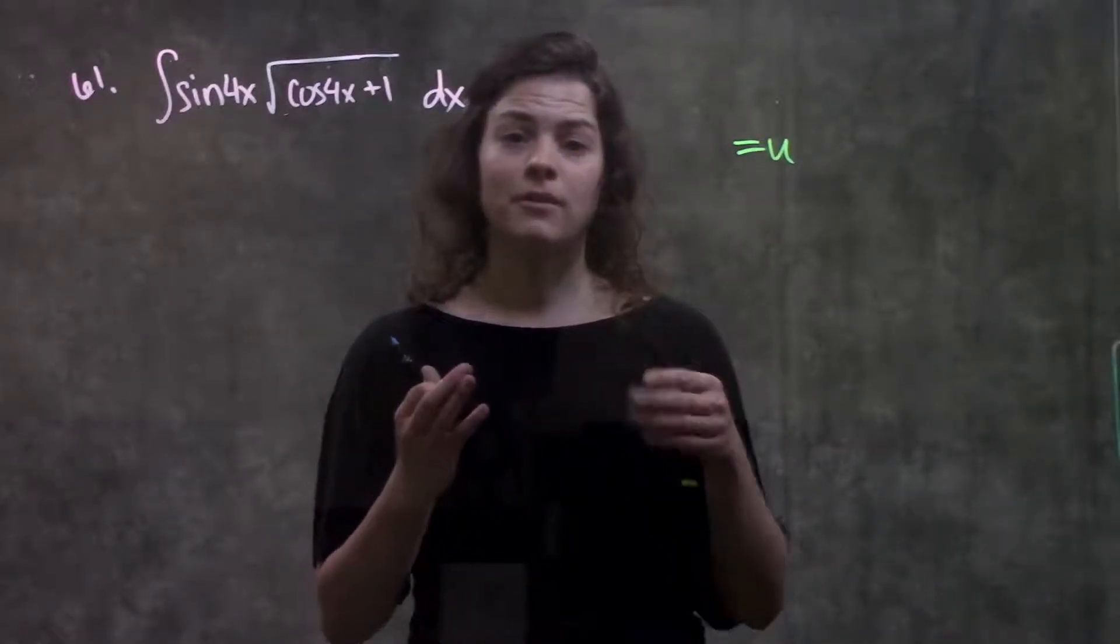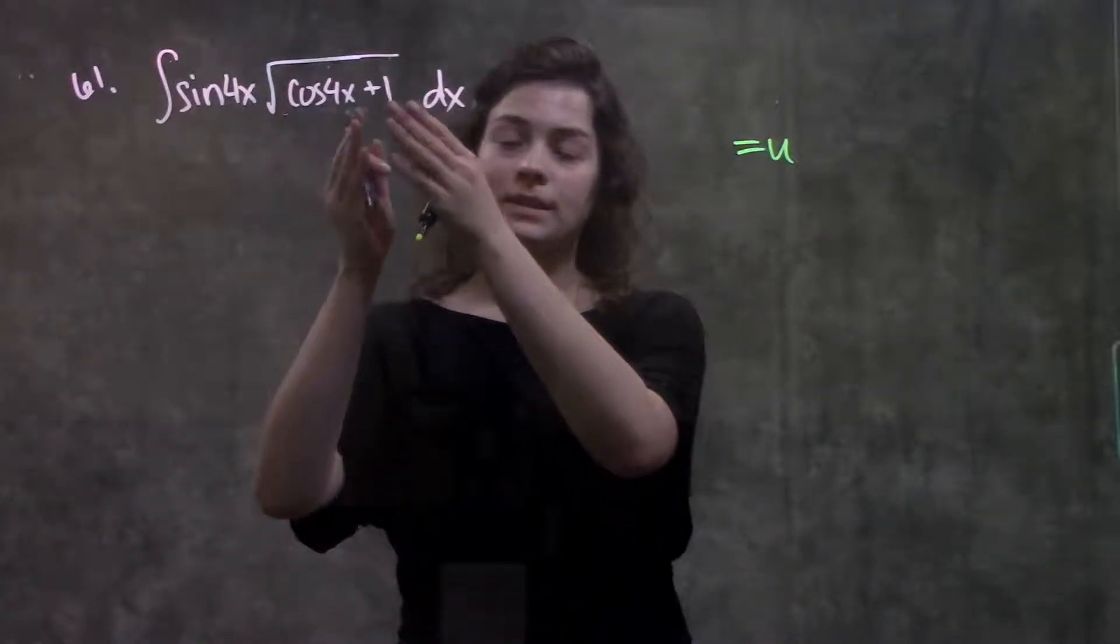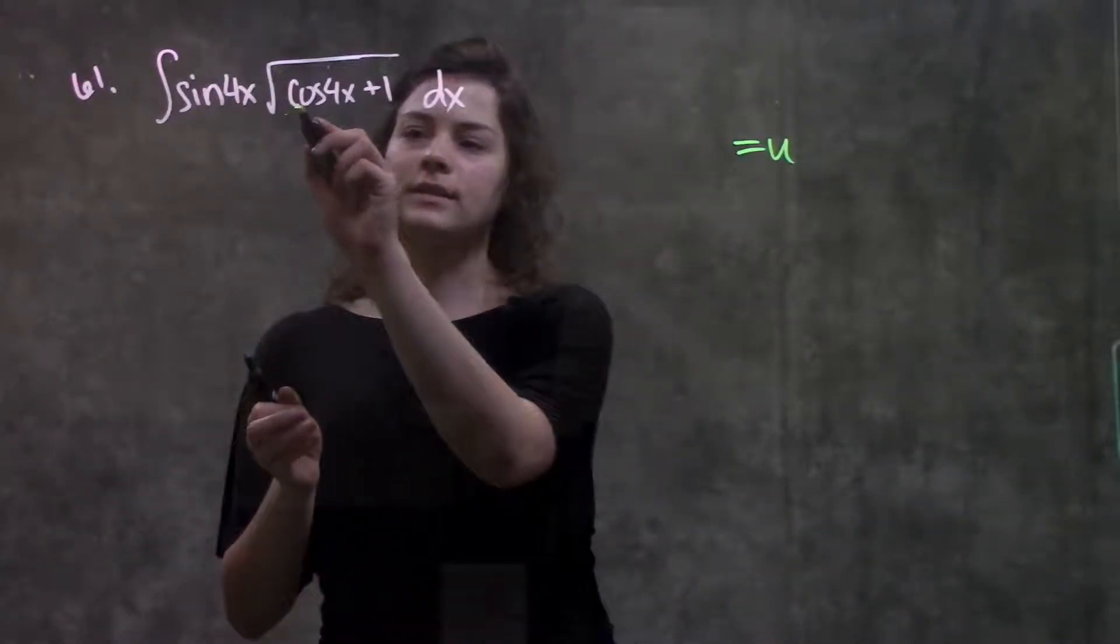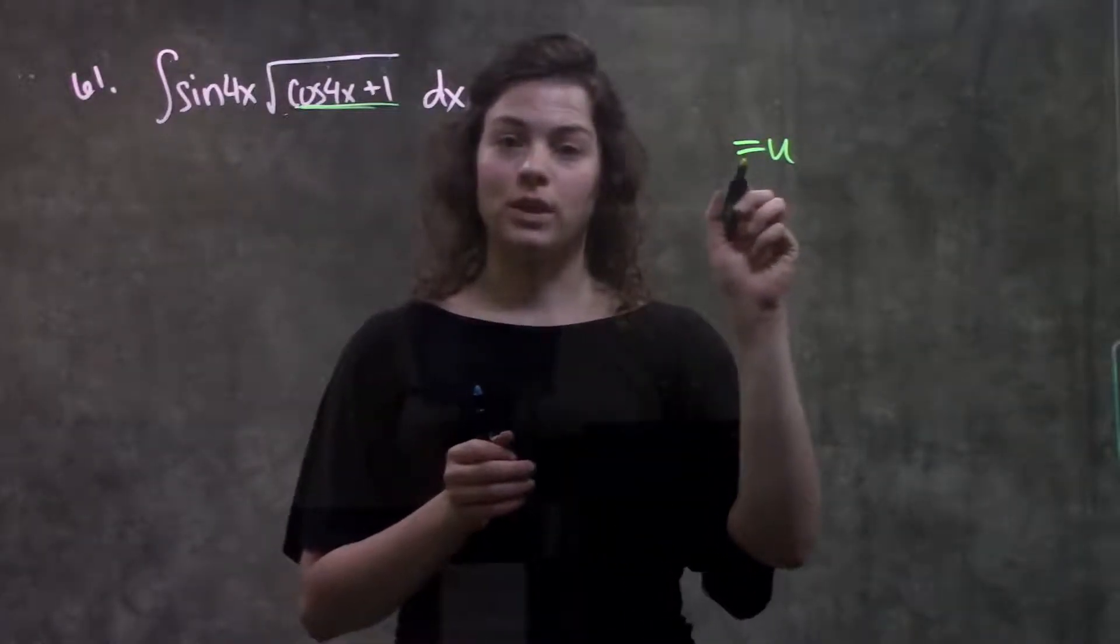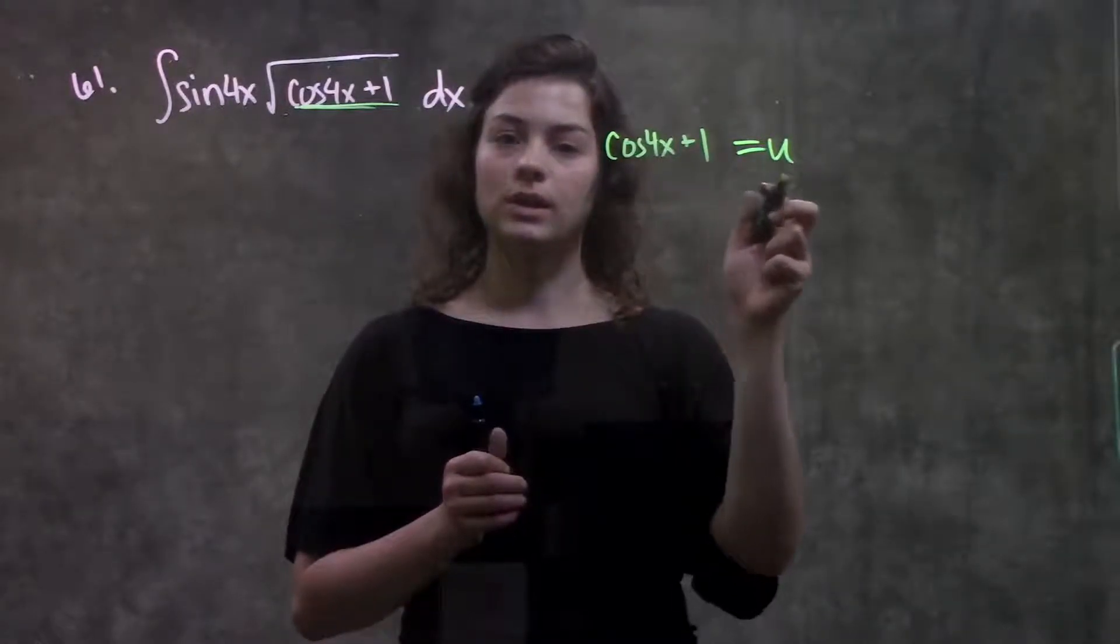A lot of times something raised to a power. In this case we have something inside of a radical, so something inside of another function. We're going to set this inside part equal to our u. So now we have cosine of 4x plus 1 is equal to our u.